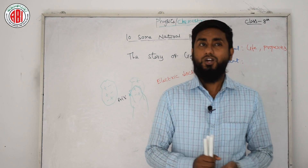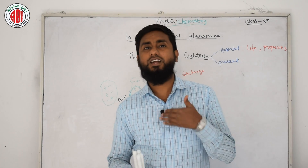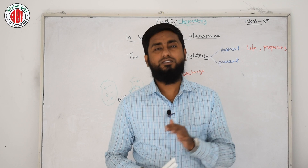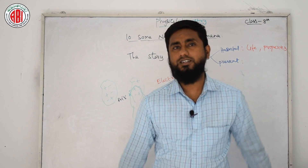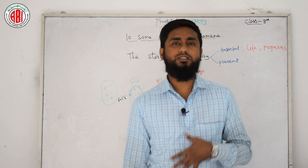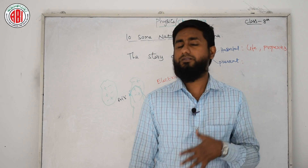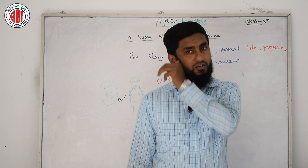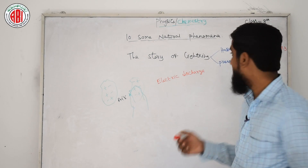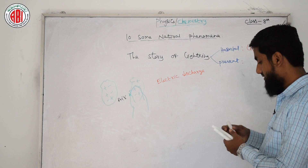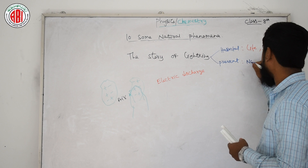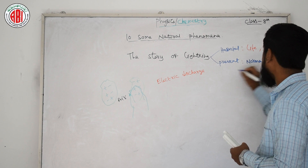Thunder और lightning जब हो रहे हों, तो बहुत ज्यादा precautions लेने चाहिए, क्योंकि यह natural disasters में से एक है which cannot be stopped by humankind — हम इंसान इसको रोक नहीं सकते। यह एक बिल्कुल natural चीज़ है। Normal prevention यानि हम घर में रह कर कैसे अपने घर को protect कर सकते हैं।